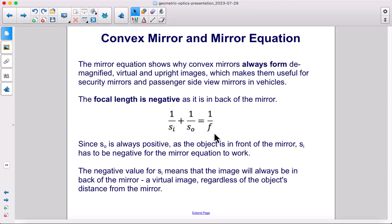The focal length is negative, as it is in back of the mirror. Since object distance s sub o is always positive, as the object is in front of the mirror, that means that s sub i has to be negative in order for the mirror equation to work.